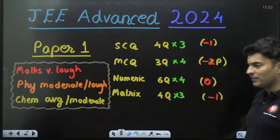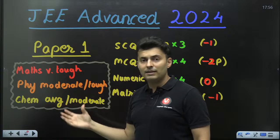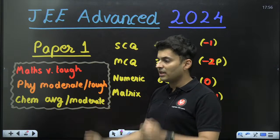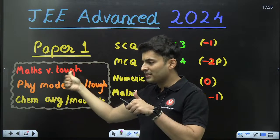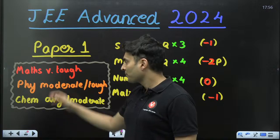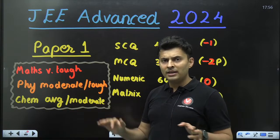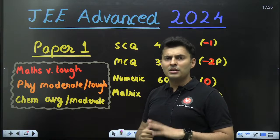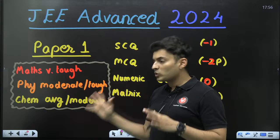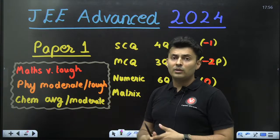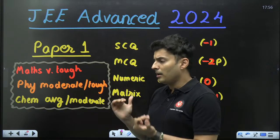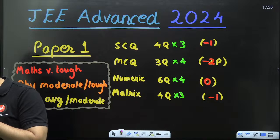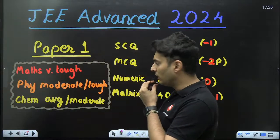Matrix type also had four questions at three marks each. Regarding Paper 1 difficulty: Mathematics was very tough and lengthy — many students were upset about it. Physics was moderate for well-prepared students, slightly tougher for others. Chemistry was as expected — average for most students who studied well, slightly above moderate for those who had left some parts.